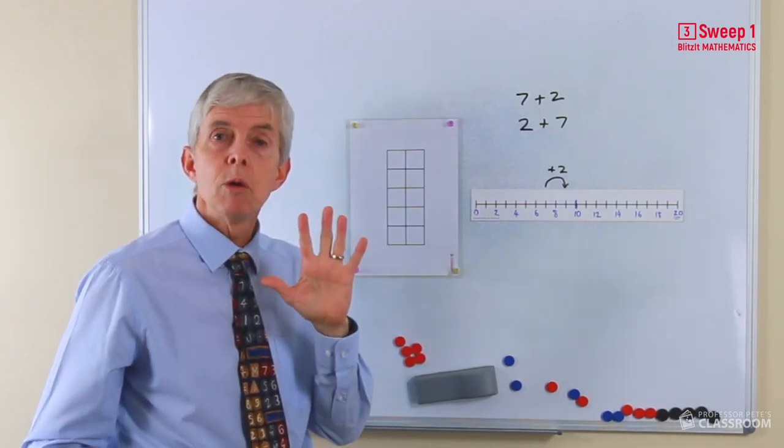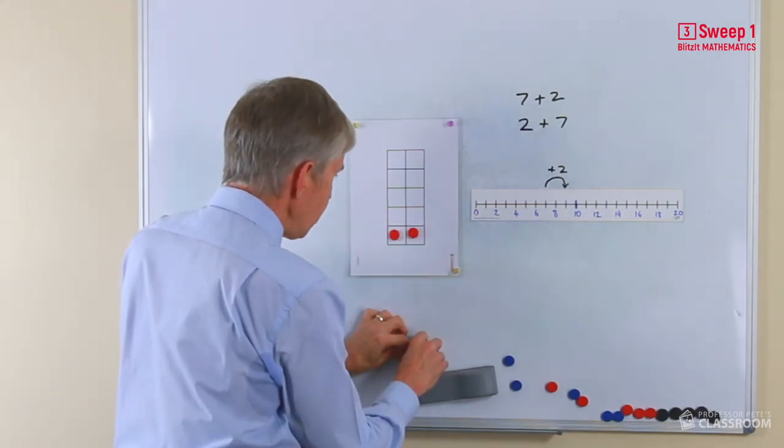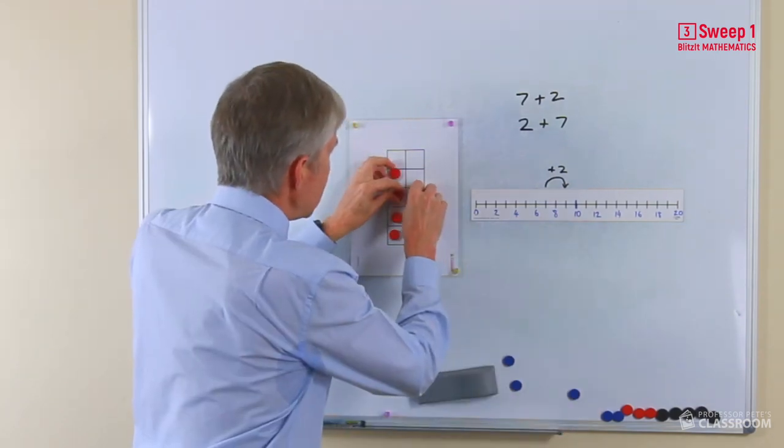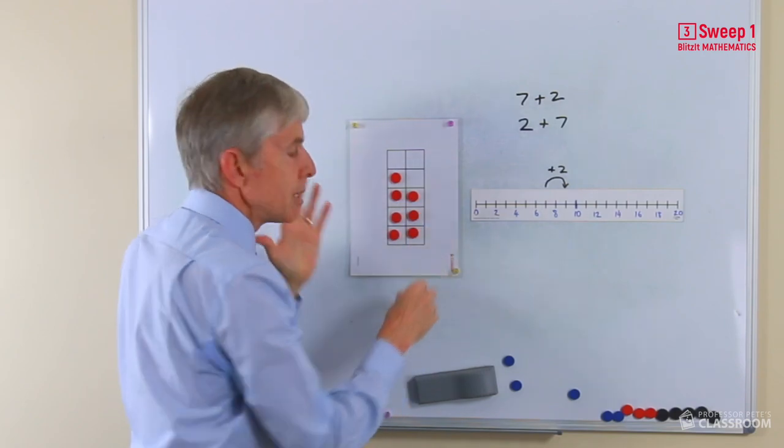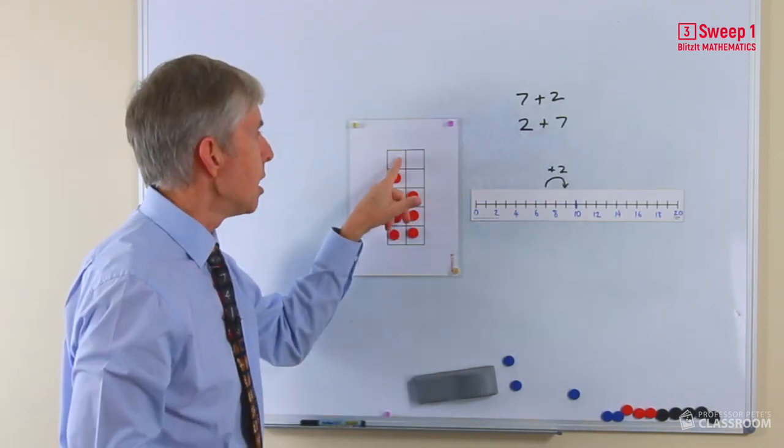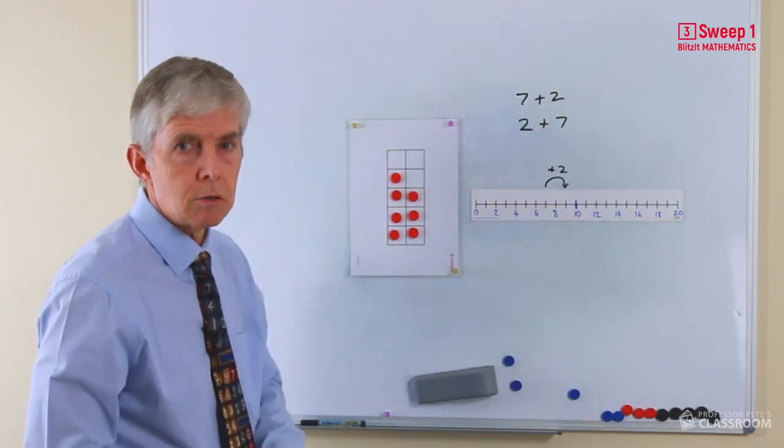And then we can put seven on the ten frame and then say so our turnaround factor is seven plus two. What will the answer be? Imagine another two here and here. What will the answer be? Of course it's nine. So you would do it that way.